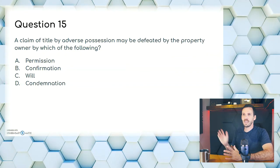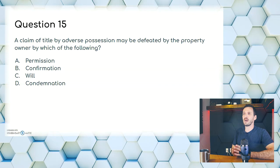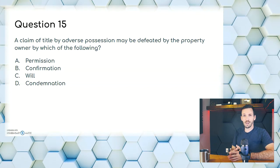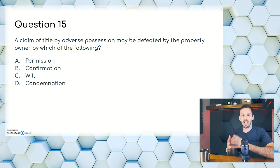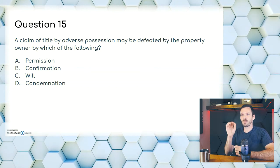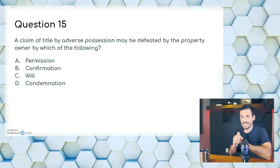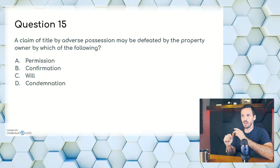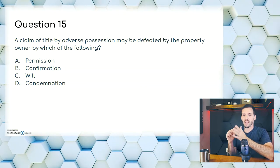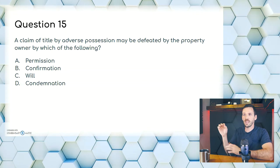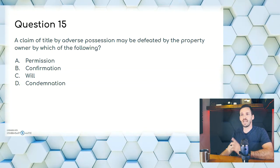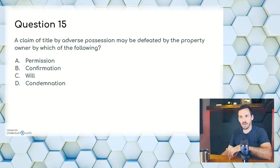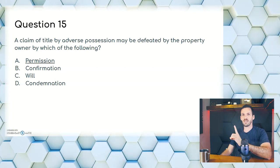Question fifteen: a claim of title by adverse possession may be defeated by the property owner by which of the following? A, permission; B, confirmation; C, will; or D, condemnation. Adverse possession is when someone takes land meeting five elements: open and notorious, exclusive, hostile, statutory period, and continuous. Once the owner gives permission for someone to use the land, it's no longer adverse possession — it's no longer hostile. The person using that land can't get ownership now. So the answer is A, permission.